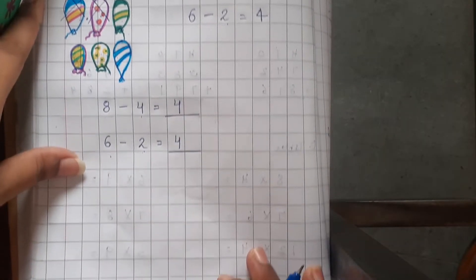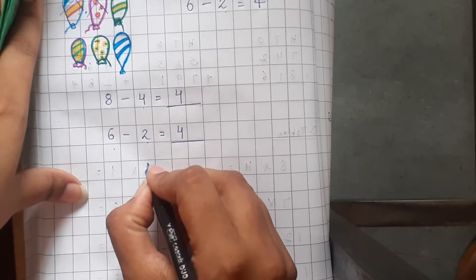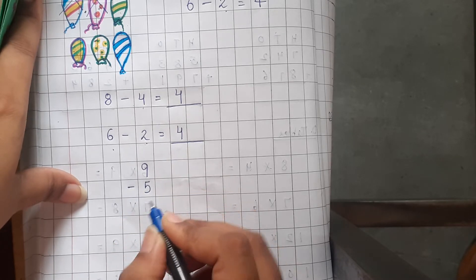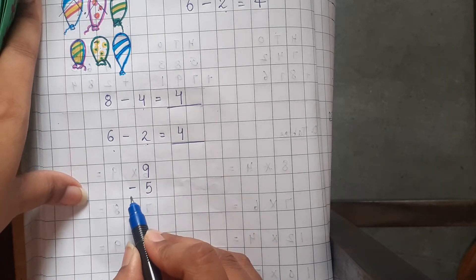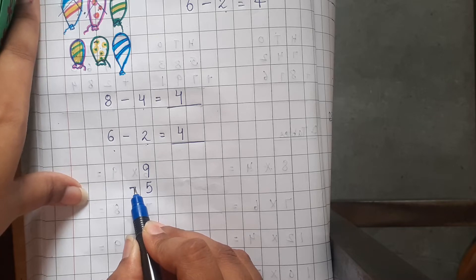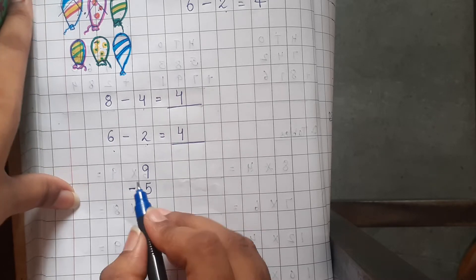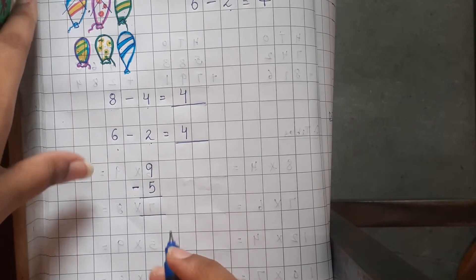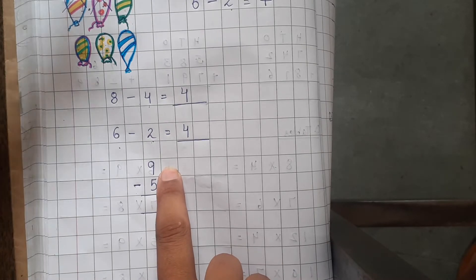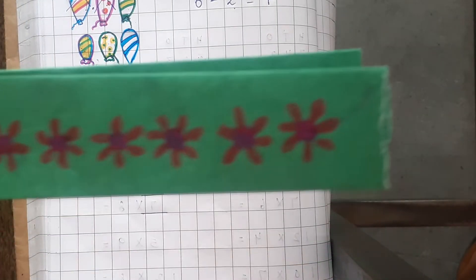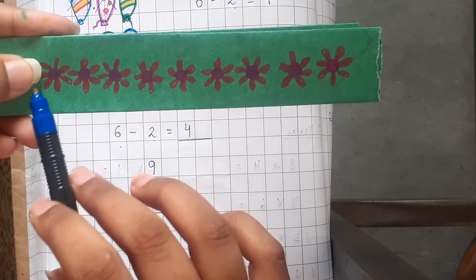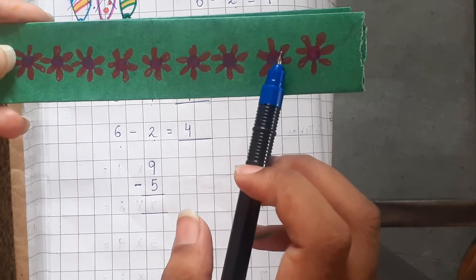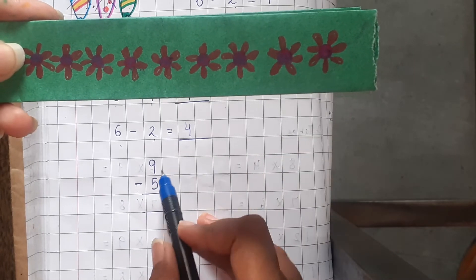Now, we can also write it in the form of sum like this: 9 minus 5. Remember students, always put this minus sign to show that we are subtracting. This symbol is used to show that we are subtracting. Now, here we have 9 flowers. We can take 9. So count: 1, 2, 3, 4, 5, 6, 7, 8 and 9.